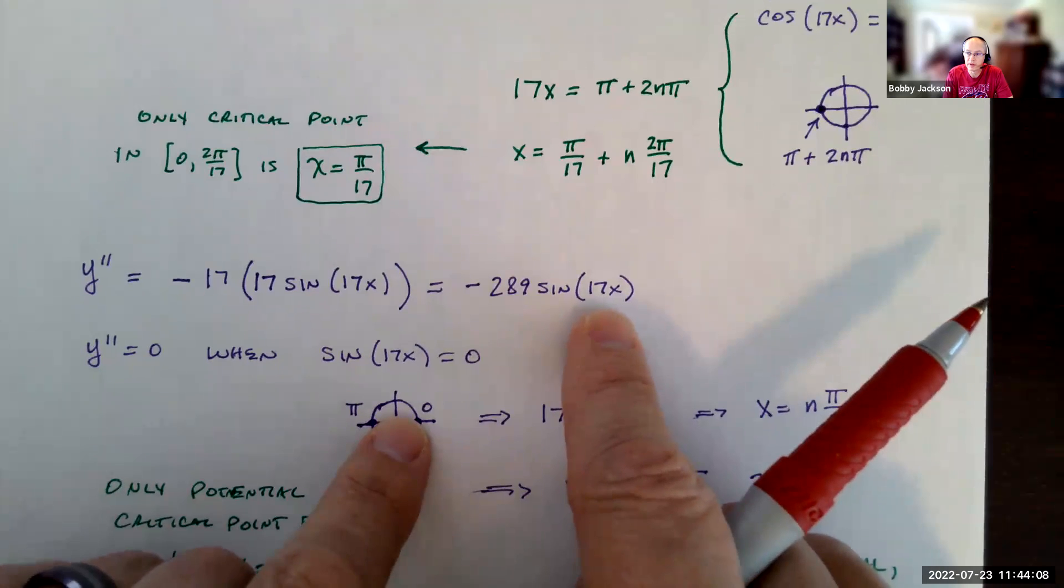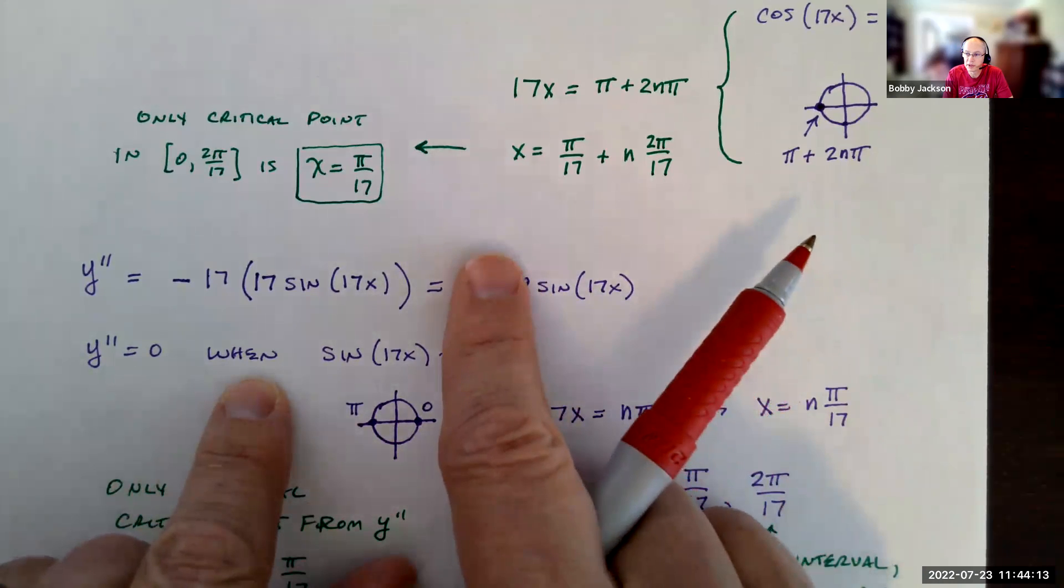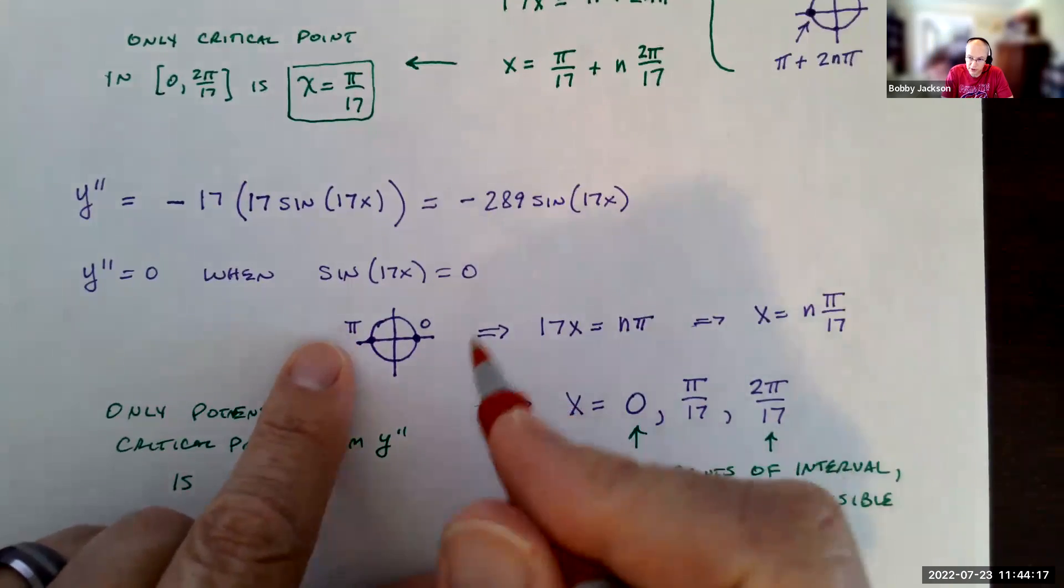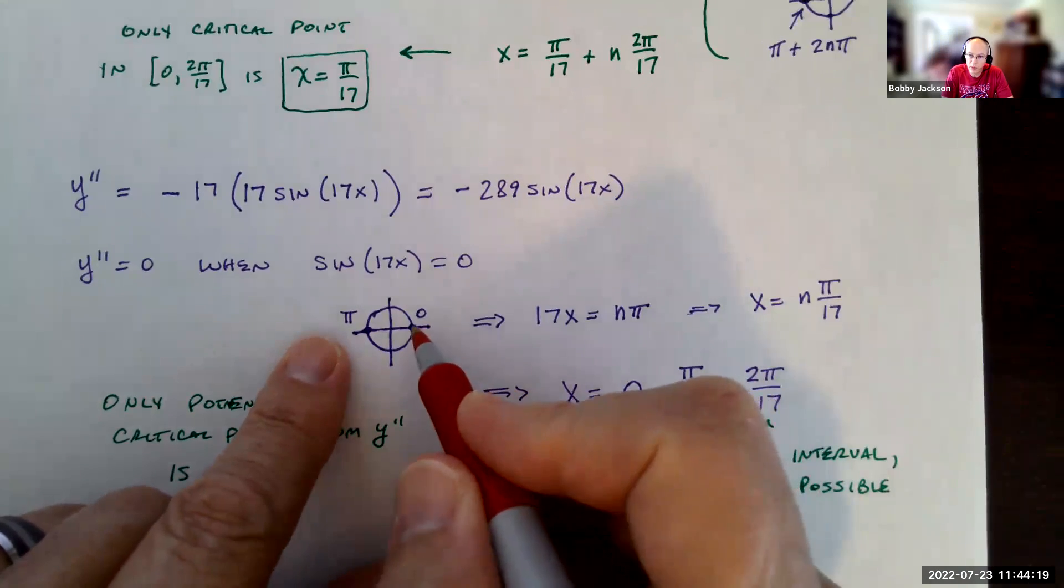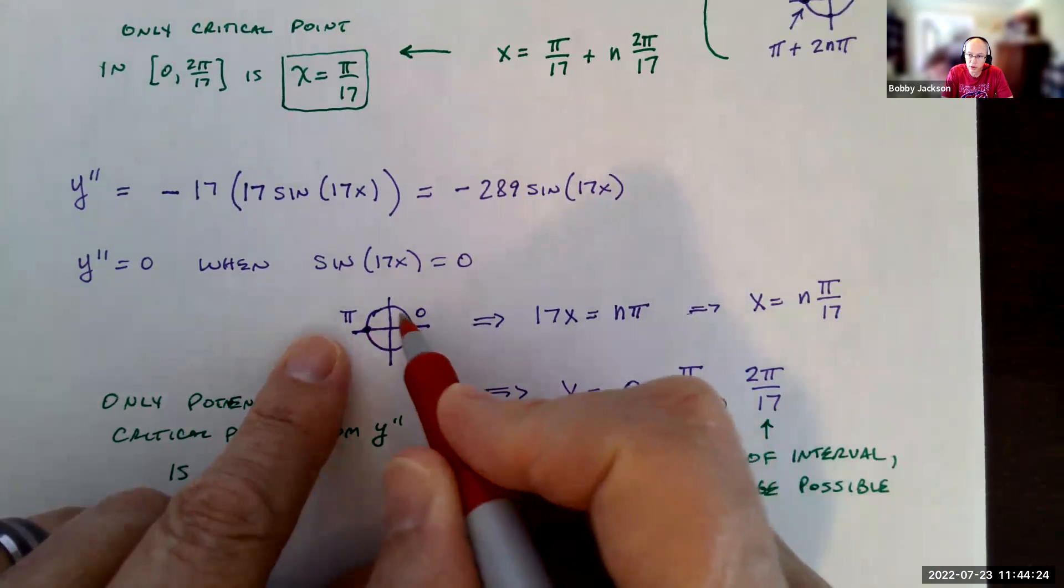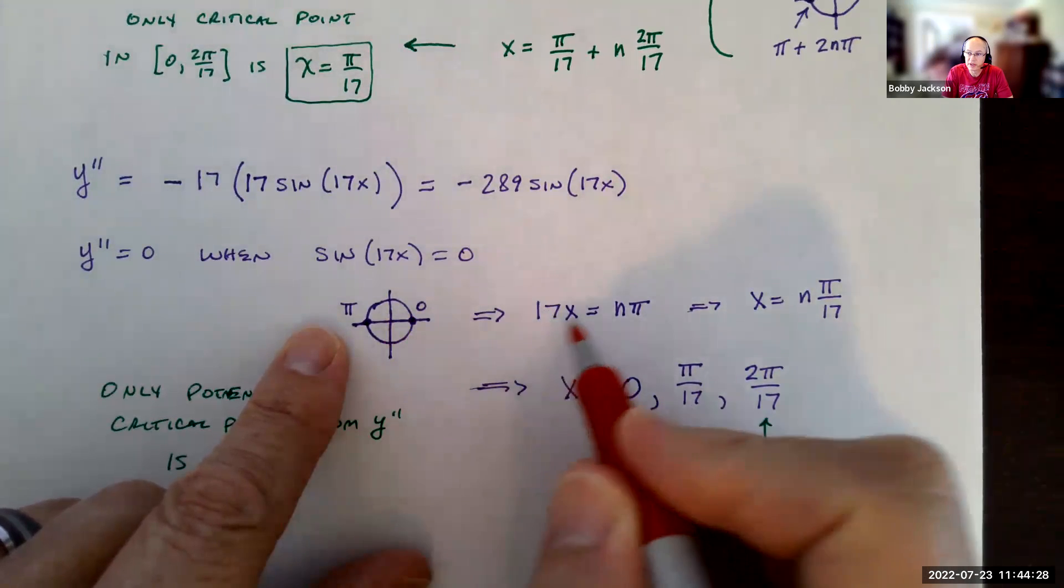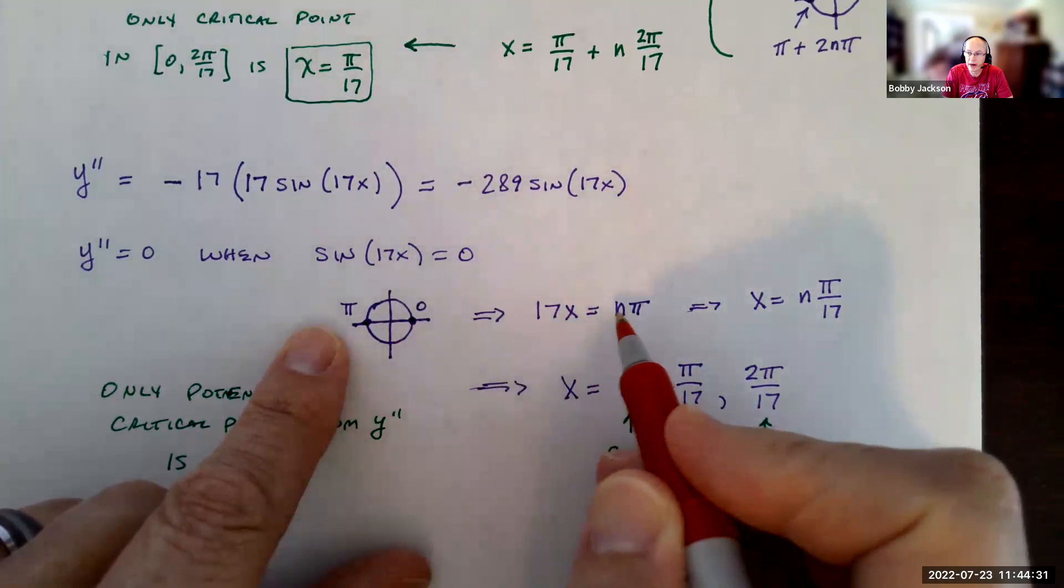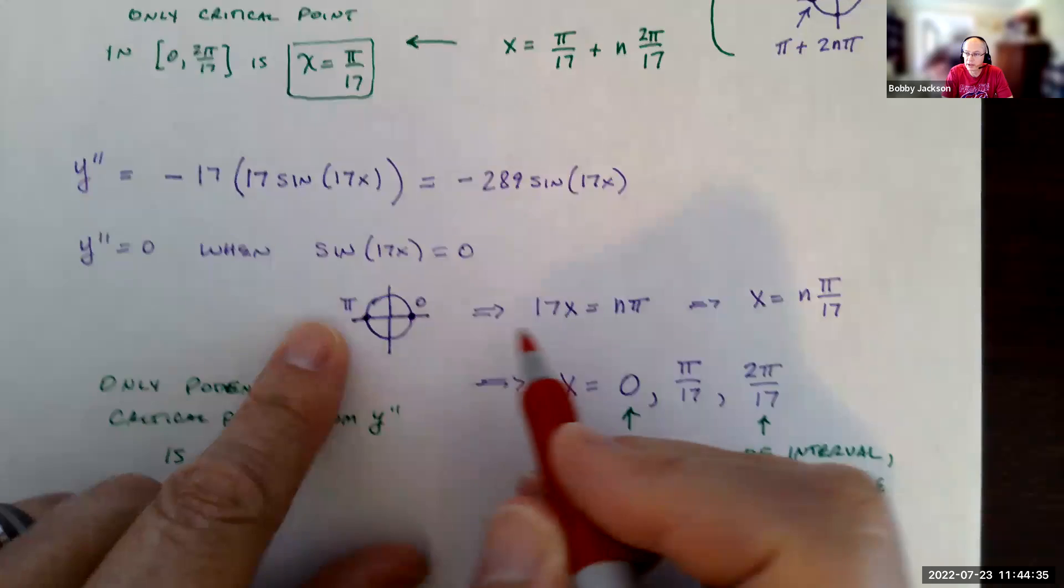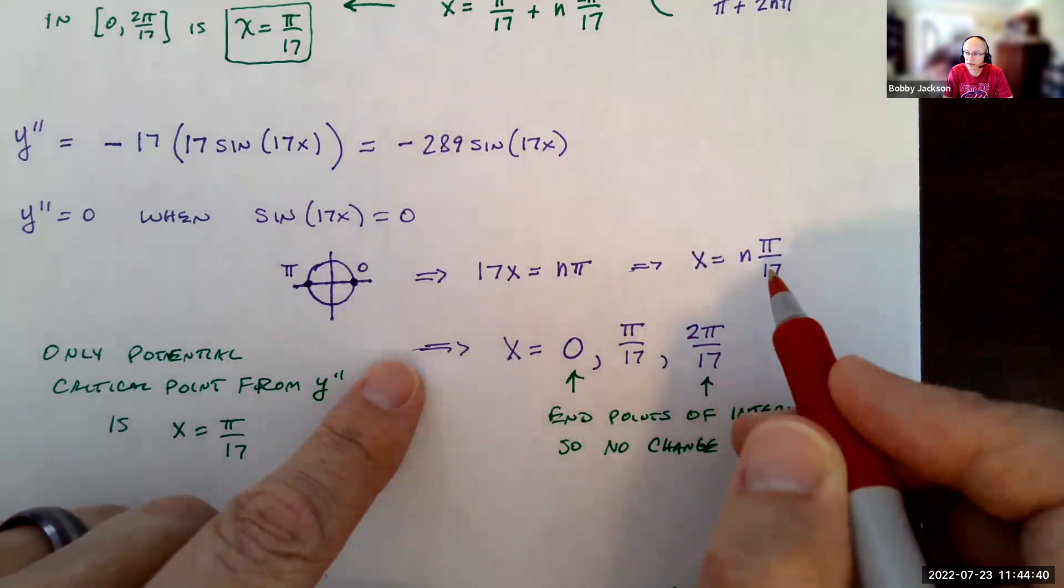So when is this second derivative equal to 0? Well, it's just one term here, and it's when sine of 17x is 0. When is sine equal to 0? Sine is 0, it's the y-coordinate on the unit circle at 0 or at π. Or in general, 0 plus any multiple of π, so just n times π. So 17x can be any multiple of π. It could be 0, could be π, could be 2π, and so on. Dividing by 17 gives me x is any multiple of π/17.